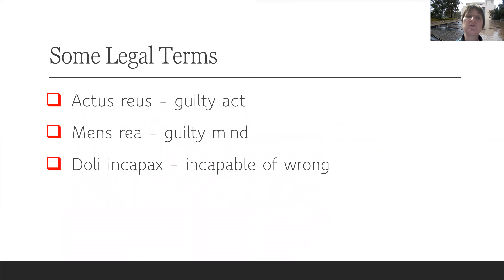So some legal terms that you may have come across. Actus reus, which means the guilty act. Mens rea, which means guilty mind, which talks about intent. And doli incapax, which means incapable of wrong and applies to children under the age of 10.